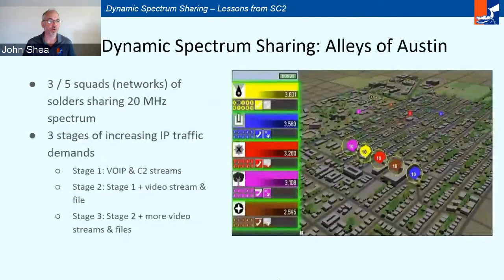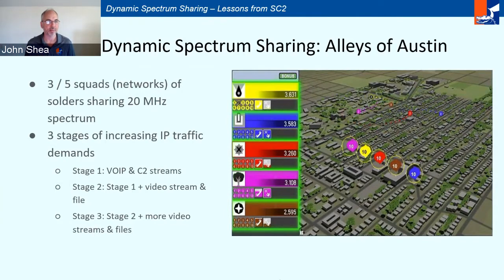Let me walk you through a few scenarios. The first is the Allies of Austin scenario — one of the simplest — where three to five squads of soldiers are moving through Austin, Texas, sharing 20 megahertz of spectrum. There are three stages, and as the stages progress, the amount of traffic given to the teams to deliver increases. Teams have different amounts of spatial reuse overlap as they move through the urban environment. In stage one, there are just some voice over IP flows and command and control streams. By stage three, there are many large file bursts as well as many video streams.